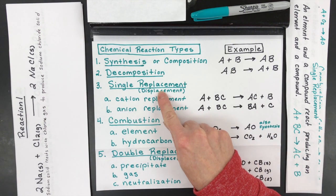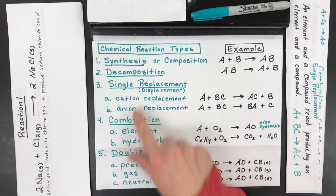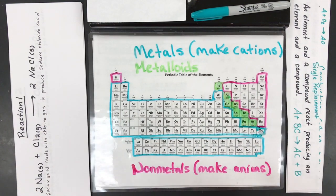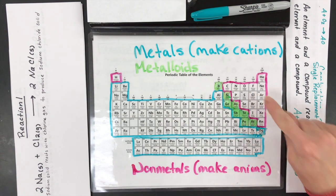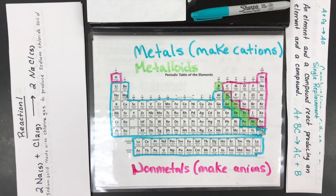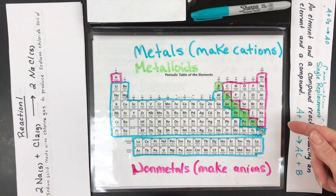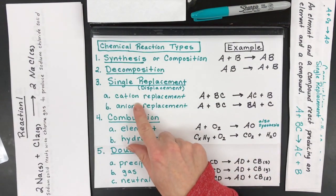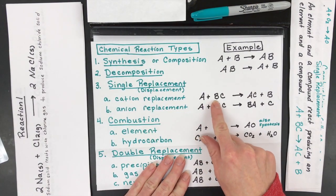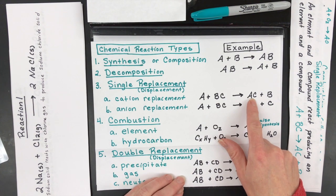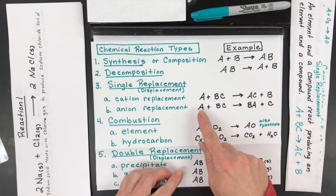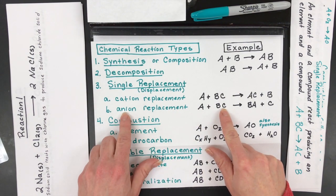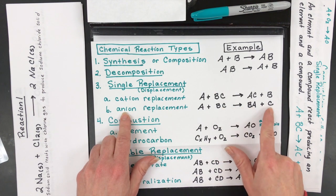Next one, single replacement or displacement. This comes in two kinds, whether you have a cation or anion. The periodic table is going to be really important again, knowing where are the metals that are going to make cations and where are those non-metals that are going to make anions. So for cations, A will be a cation, it'll push out B and bond with this element C or a polyatomic ion. Or for anions, A might try to push out C, bond with B and push out C.